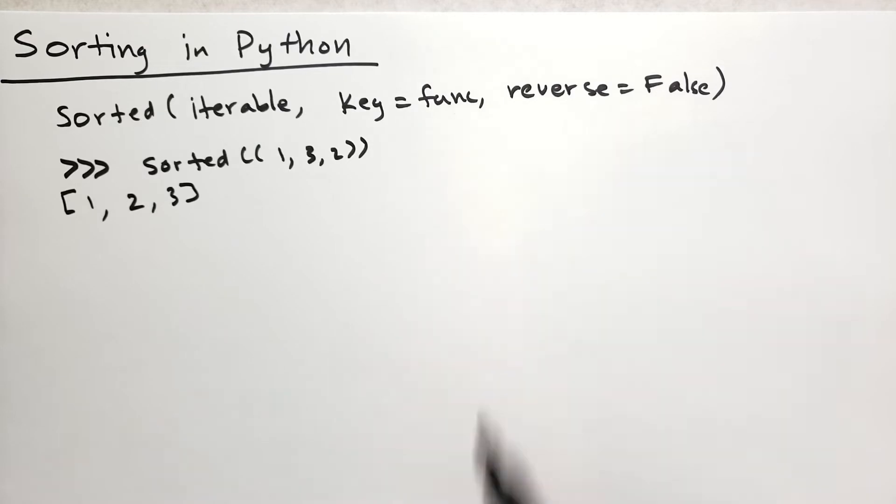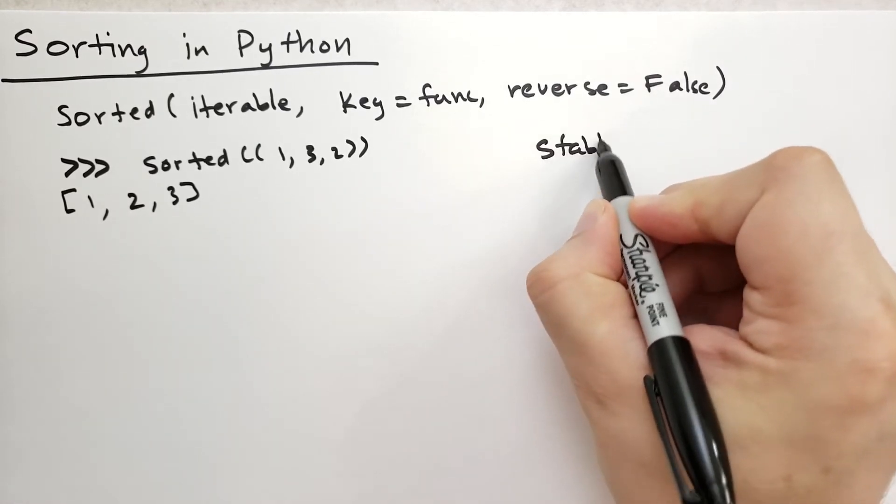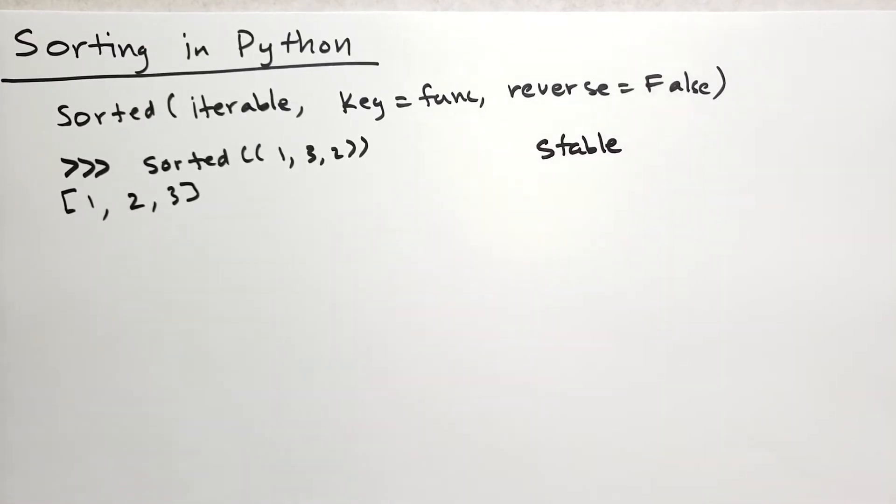Note that this uses stable sort. What that means is that if it finds two elements that are equal to each other in sorted order, it will preserve the order.